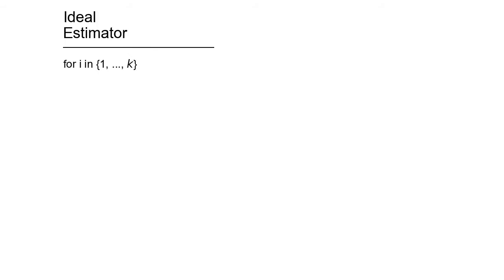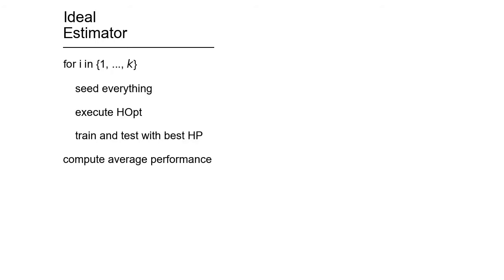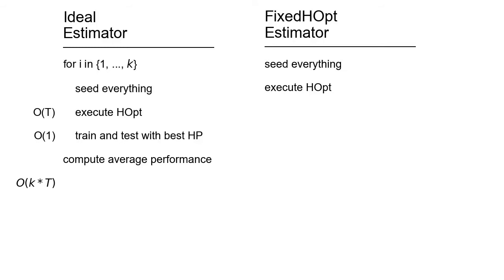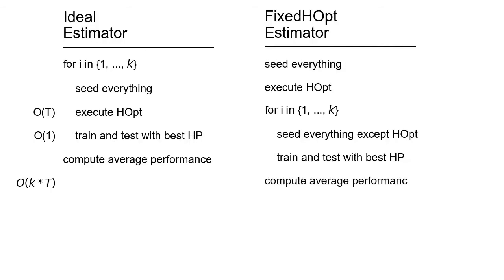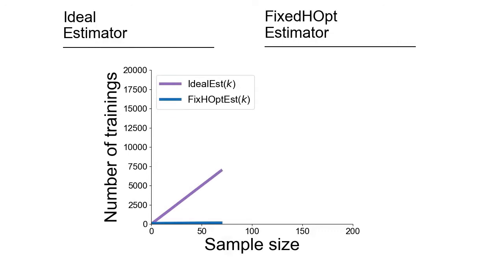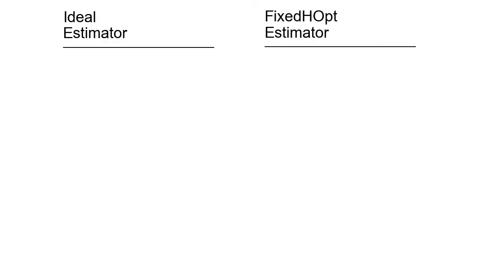To estimate the mean performance of a learning algorithm for each performance measure, we should vary all sources of variation with random seeds, then execute hyperparameter optimization and measure the performance based on best hyperparameters. We call this estimator of the mean performance the ideal estimator. For an average on k measures, it requires training k times t models, where t is the budget for hyperparameter optimization. A cheaper alternative is to first randomize all sources of variation, execute hyperparameter optimization once, and reuse the best found hyperparameters. For each of the k measures, we vary all other sources of variations and then train and test using the same best hyperparameters. We call this estimator the fixed h-up estimator, requiring only k plus t trainings. The number of trainings required by fixed h-up is significantly lower than for the ideal estimator, but the ideal estimator is more reliable — it is the ideal one after all.